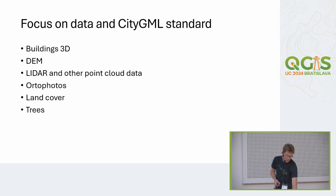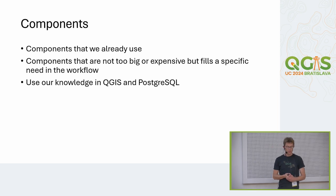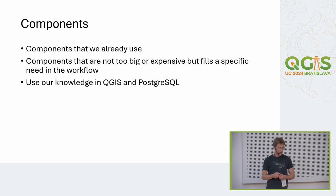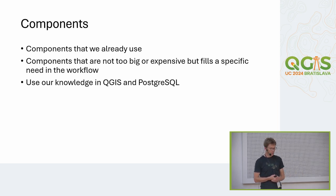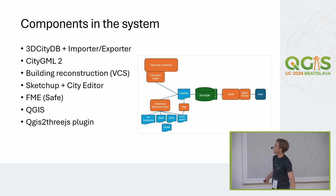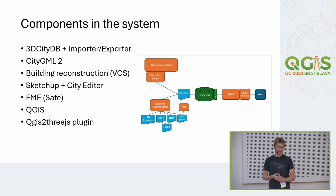And what could we do with that data? We would like to do it with components we already have, like the PostGIS database. We have QGIS and some other components. The heart of the system is the 3D City DB and the importer and exporter tool — it's an open source database implementation of the CityGML standard. We used the CityGML version 2 for that.